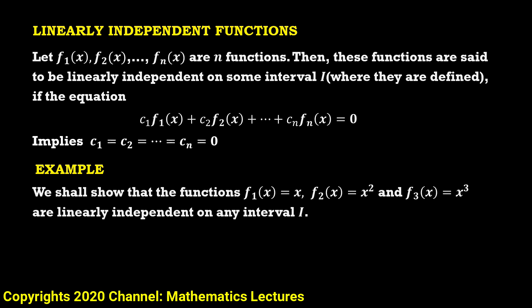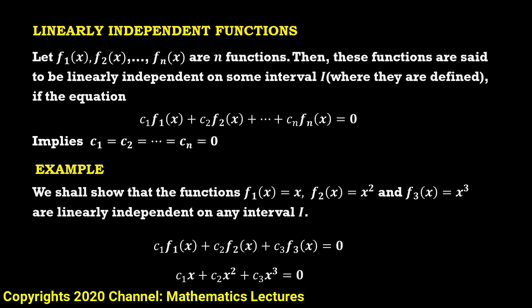Here we have three functions: x, x², and x³. We write the linear combination of these functions as c1·f1(x) plus c2·f2(x) plus c3·f3(x) equal to 0. Replacing the functions with their values, we get c1·x plus c2·x² plus c3·x³ equal to 0.